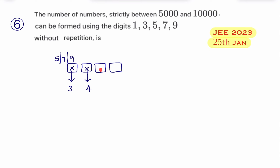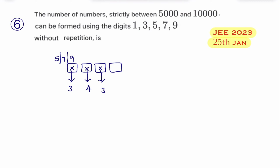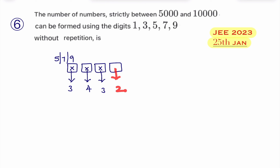The second box is also filled. For the third box, other than the two numbers already written, any of the remaining digits can be used. Three digits are remaining, so the third box can be filled in three ways. For the last box, two numbers remain, so the fourth box can be filled in two ways.